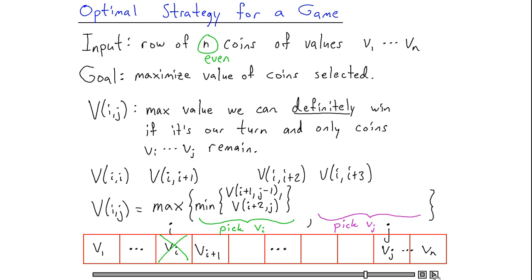And of course, I don't want to forget the one remaining piece of this expression. If I actually pick the i-th coin, then I also receive, in addition to this minimum, the value of the i-th coin, vi. And the other sub-expression, the one that results from when I picked the j-th coin first, is very similar.